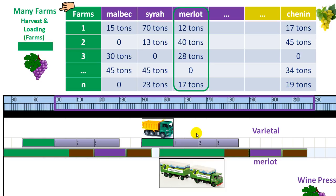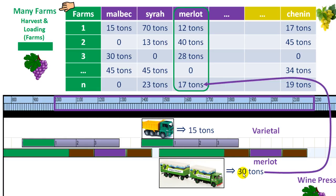Another constraint is that we want to use the full capacity of the truck. This small truck has a limit of 15 tons, and the big truck can load up to 30 tons. You don't want to waste the capacity — you don't want to load only 17 tons if the capacity is 30. So out of 40 tons available, you load 30 in one trip, and the remaining 10 tons will be loaded in another trip.